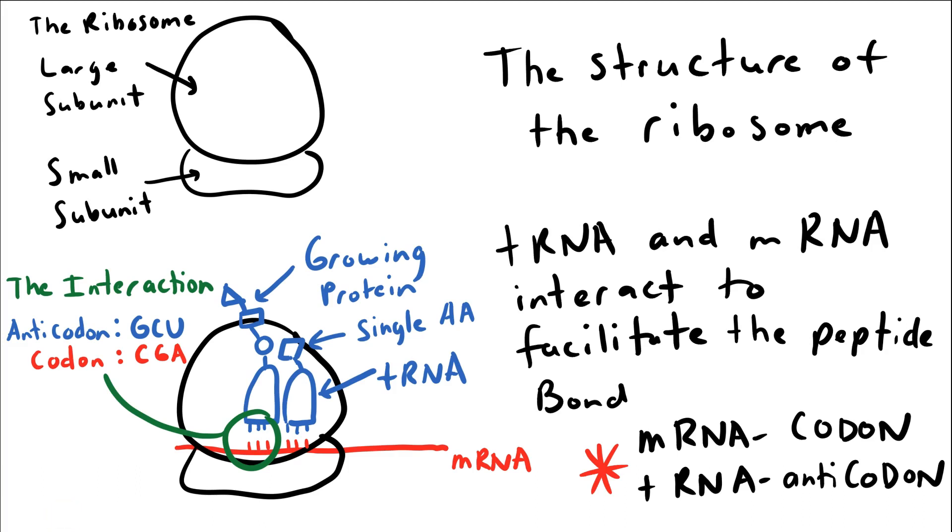So for starters, let's look at the structure of the ribosome. There are two subunits in the ribosome that I want to draw your attention to, the large subunit and the small subunit. Basically, the ribosome is a cell structure, it's composed of ribosomal RNA proteins that come together to facilitate translation. So if you look back at the other screencasts when we talk about translation, going from messenger RNA to proteins, this is happening at the ribosome.